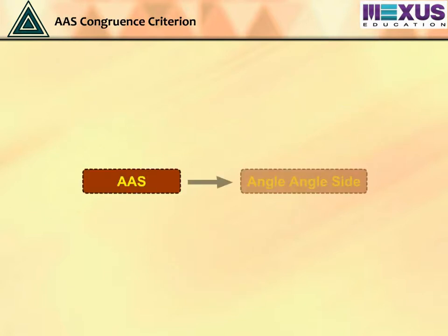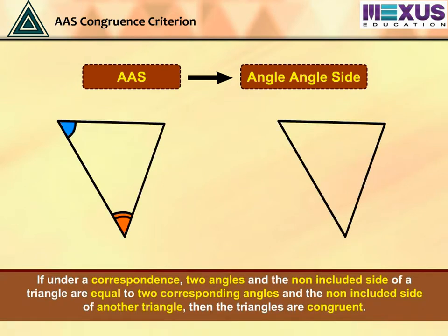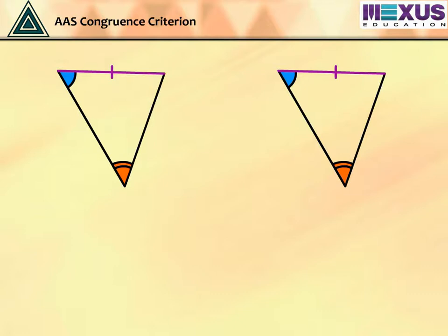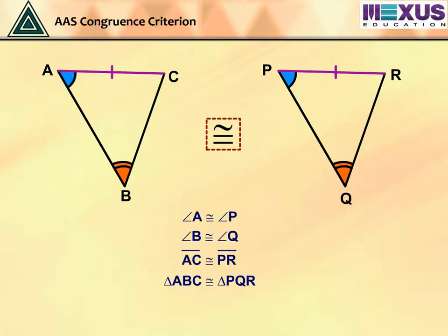The fourth criterion is AAS, that is, angle-angle-side criterion. It states that if, under a correspondence, two angles and the non-included side of a triangle are equal to two corresponding angles and the non-included side of another triangle, then the triangles are congruent. For given triangle ABC and triangle PQR, angle A is equal to angle P, angle B is equal to angle Q, and side AC is equal to side PR. Therefore, by applying AAS criterion, we can say that triangle ABC is congruent to triangle PQR, as two corresponding angles and a non-included side of both triangles are congruent.